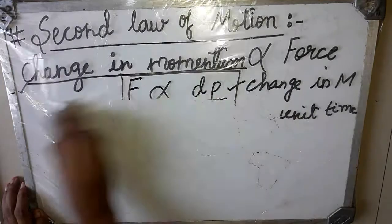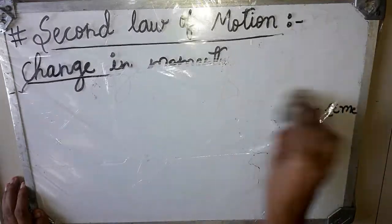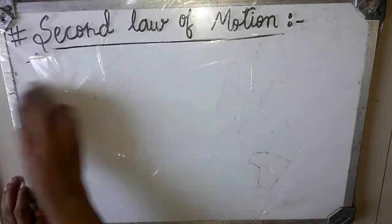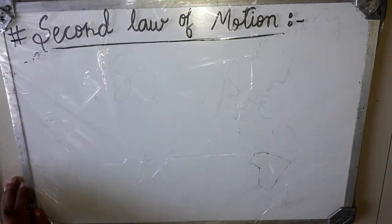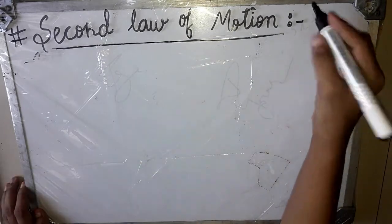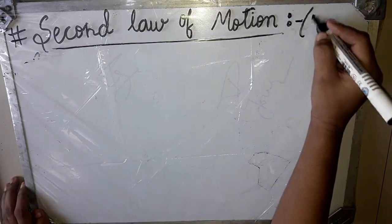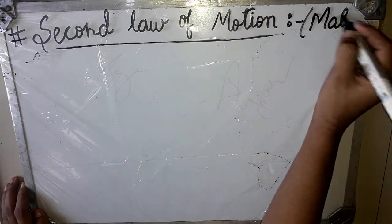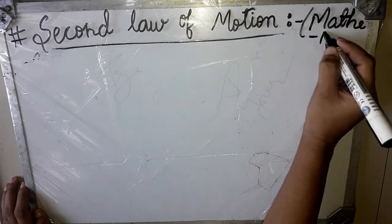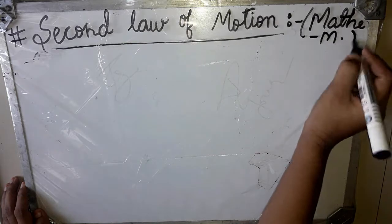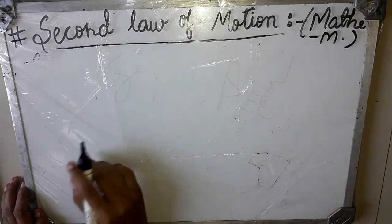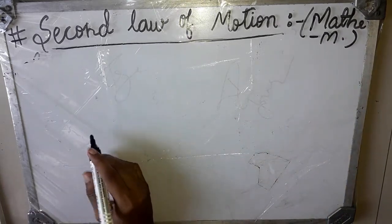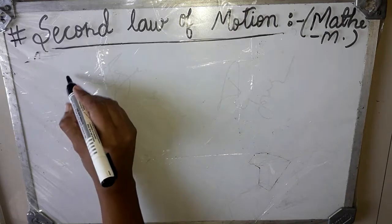Example: Derive an expression for the second law of motion mathematically, or the mathematical expression. So, how will we derive it? We will consider a body of mass m.